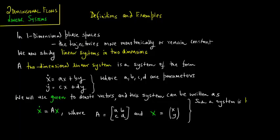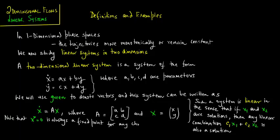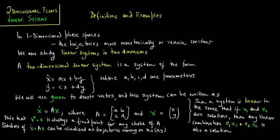Such a system is linear in the sense that if x1 and x2 are solutions, then any linear combination c1*x1 plus c2*x2 is also a solution. Note that x-star equals 0 is always a fixed point for any choice of A. Solutions of x-dot equals Ax can be visualized as trajectories moving on the x-y plane, which is called the phase plane.